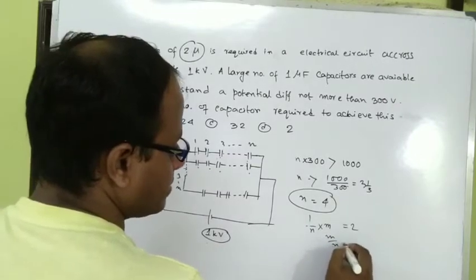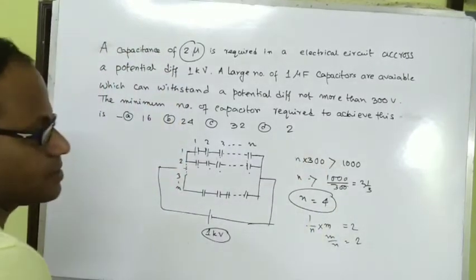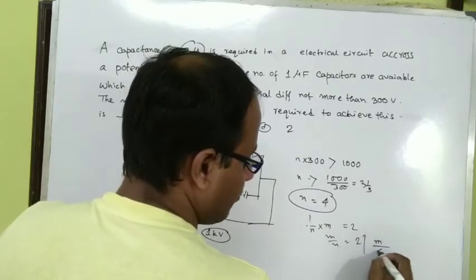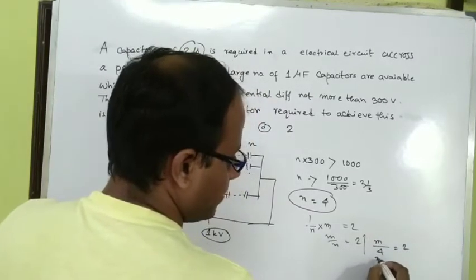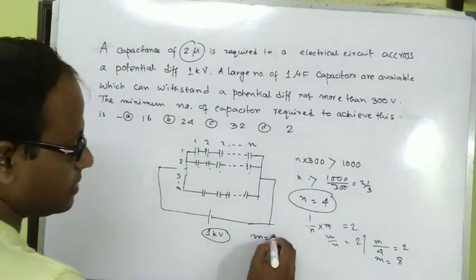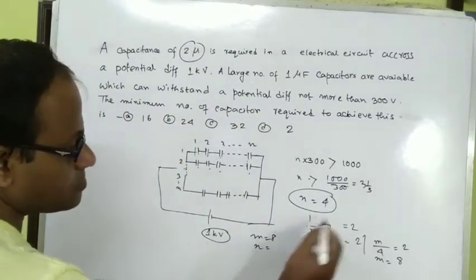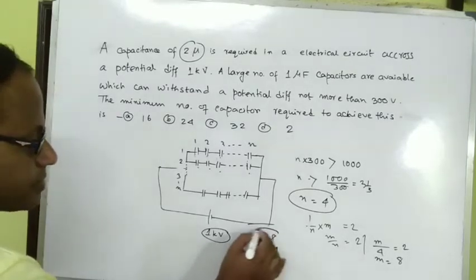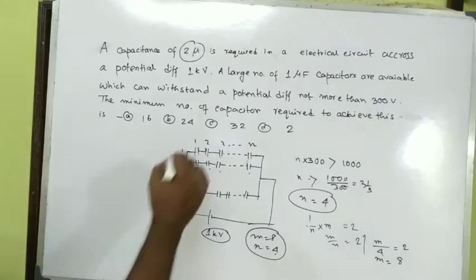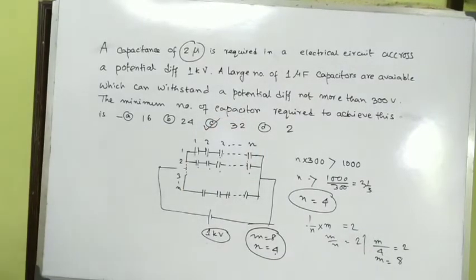We need m times C by n equals 2 microfarad. Since C equals 1 microfarad and n equals 4, we get m by 4 equals 2, so m equals 8. The total number of capacitors is m times n equals 4 times 8, which equals 32. The answer is 32.